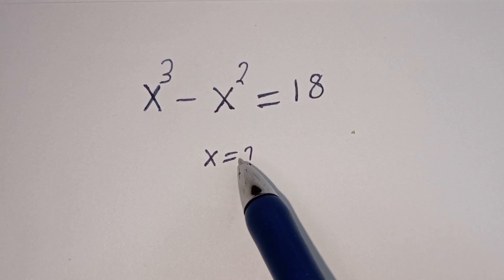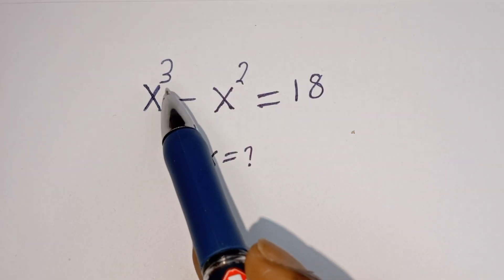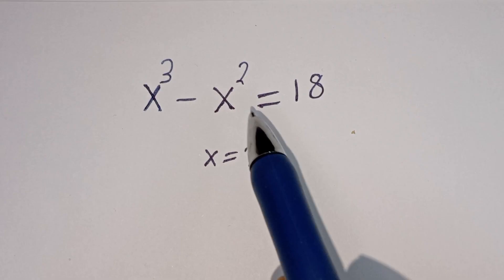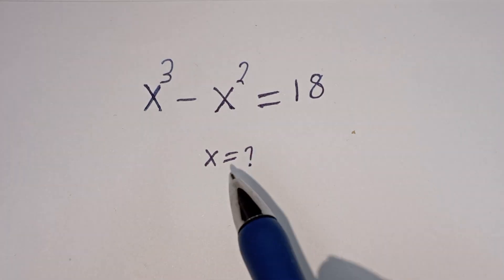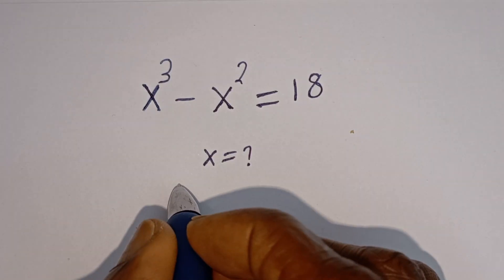Hello. How to solve for S in this equation: S to the power of 3 minus S squared is equal to 18. Solution.